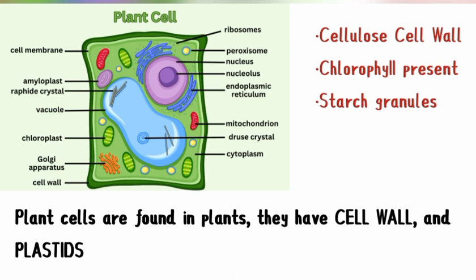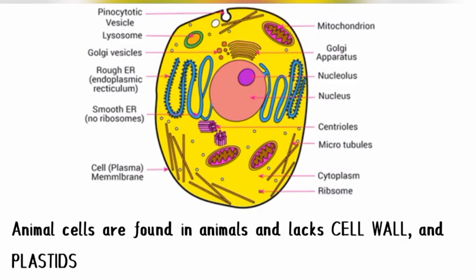When we talk about plastids, plastids are pigment-containing organelles. We have different kinds of plastids: chromoplasts, leucoplasts, and chloroplasts. The one we focus on is the chloroplast, which contains chlorophyll. This is a distinguishing factor separating the plant cell from the animal cell. You can see the diagram of the plant cell — it is greenish in color and you can locate the chloroplasts in that diagram.